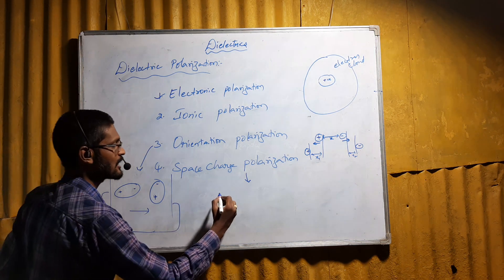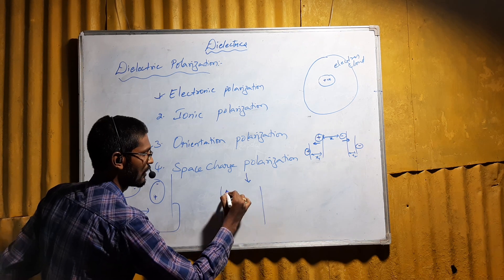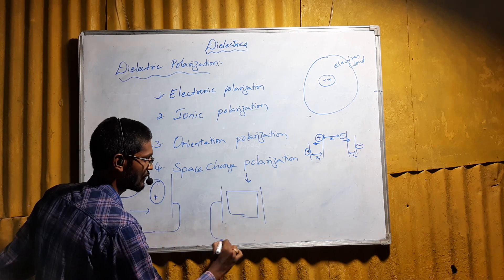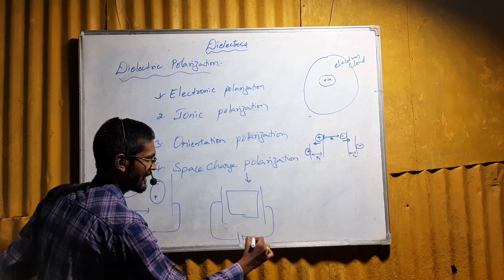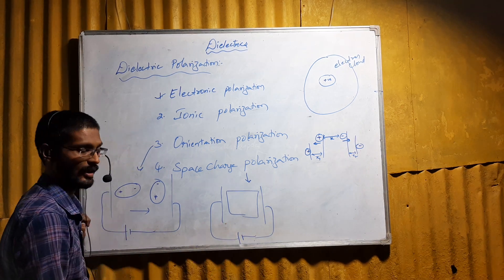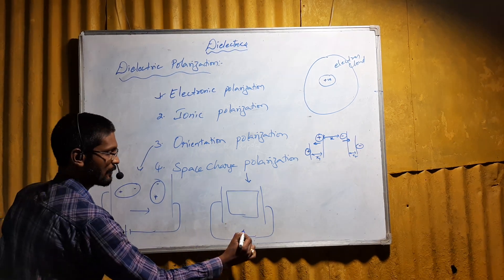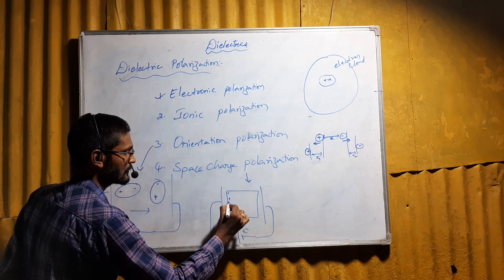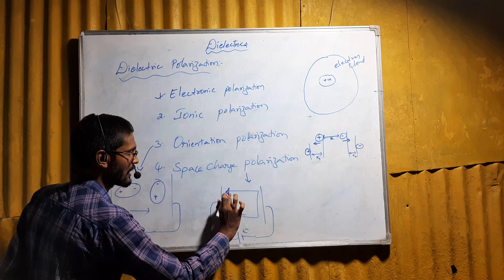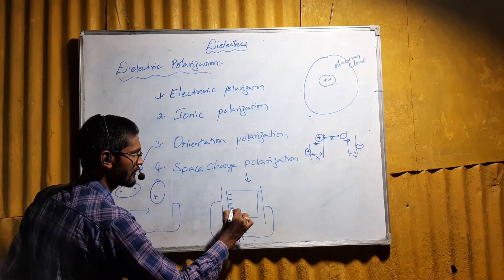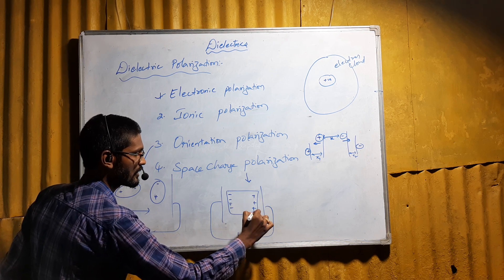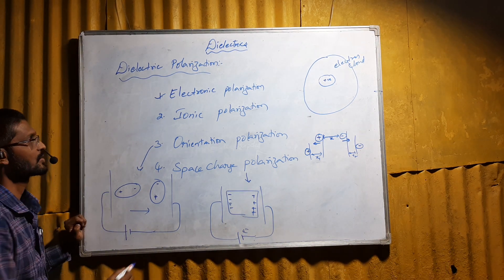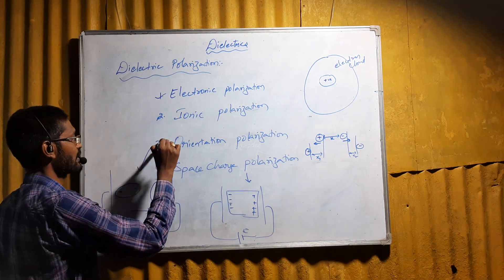In space charge polarization, on application of electric field to dielectric materials, some charge will be accumulated on the surface of the dielectric material. For example, in a parallel plate capacitor with a dielectric material in between, when you apply electric field, charge will be accumulated on the surface of this material. This is called space charge polarization. These are the four types of polarization.